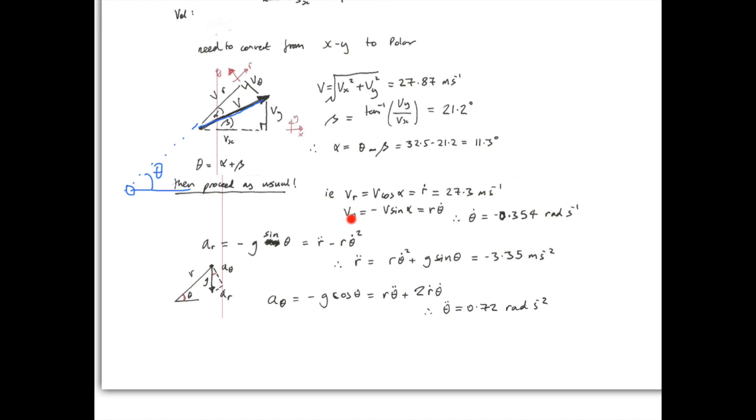Now, Vtheta is going to be this one. Now, this is V sine of Alpha, but it's in the negative Theta direction. Theta here is positive up, and Vtheta is going to be down. So, this is going to be minus V sine Alpha. This is equal to R theta dot. So, Theta dot is computed as follows.